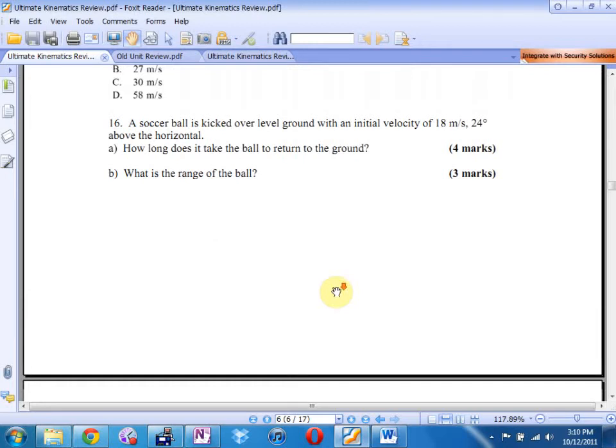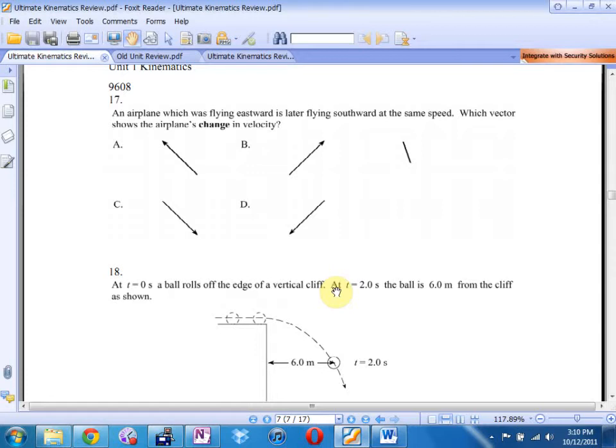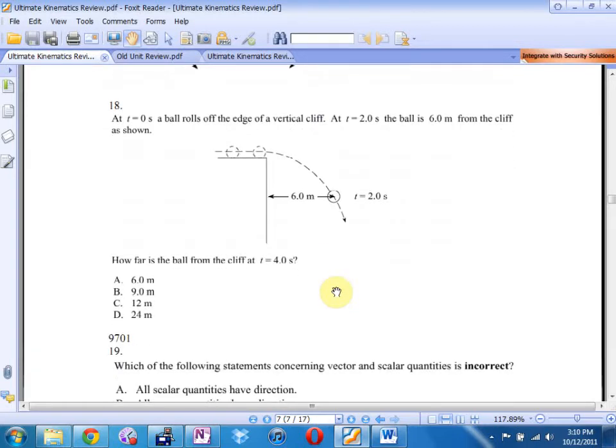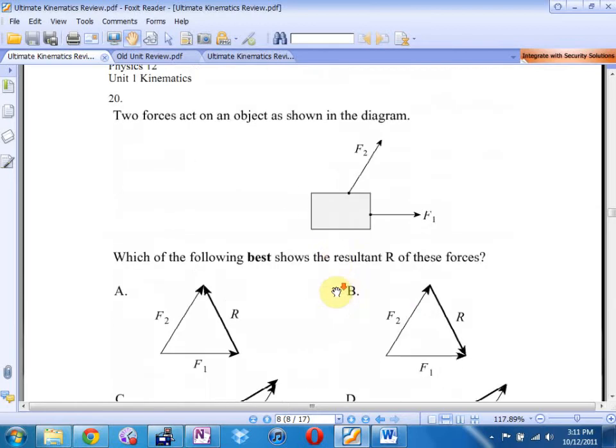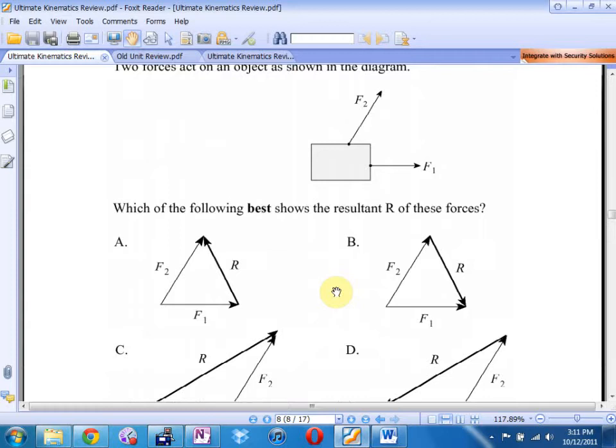It's asking you to find the range and find the total time of flight. Totally fair game as far as I'm concerned. What I mean by I like it, I'm telling you right now on the written section, there's going to be a from the ground to the ground. I won't tell you exactly what I'm going to ask, but you better be able to handle it. How long in the air for? What's the range? What's the maximum height? How long to get to the top? What's the velocity, magnitude, and direction after whatever seconds?